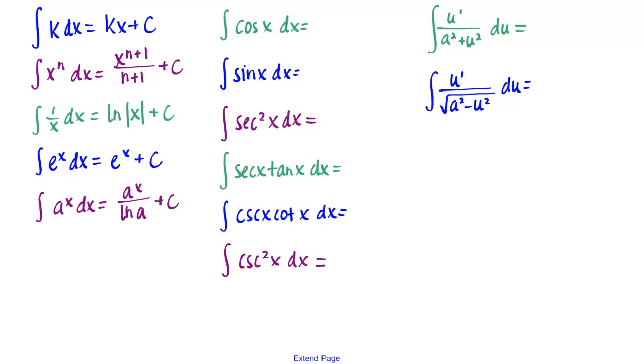Now let's move on to trig integrals. The integral of cosine x dx is sine x plus c. The integral of sine x dx is negative cosine x plus c. The integral of secant squared dx is tangent x plus c. The integral of secant x tangent x dx is secant x plus c.